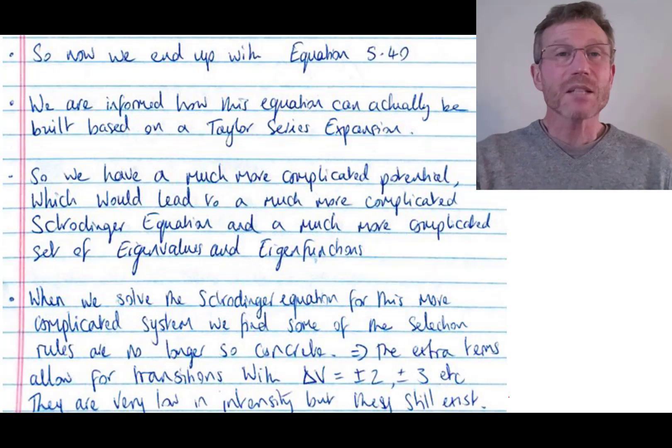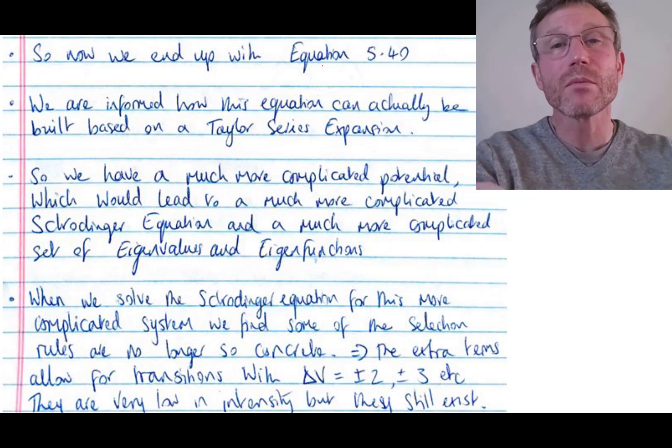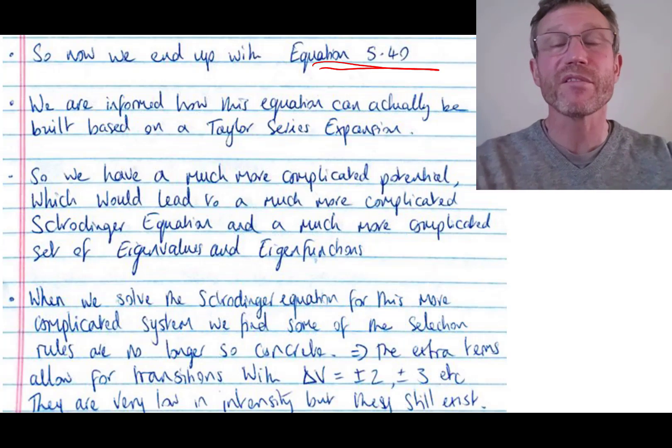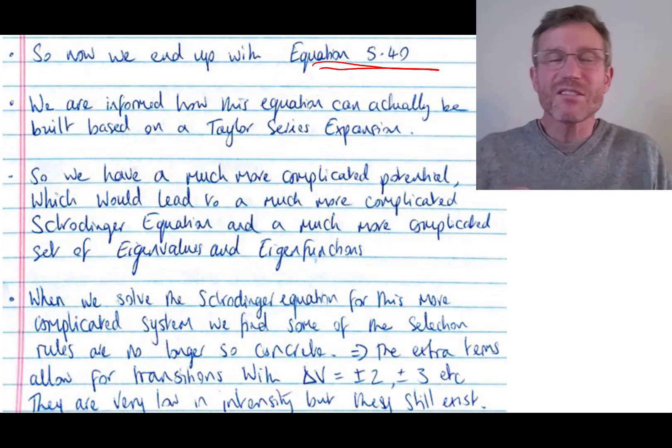some additional terms to our classical expression for the potential energy. So in the textbook, we end up now with equation 5.40, and this is really a description in classical terms of the curve that we, it's the potential energy with